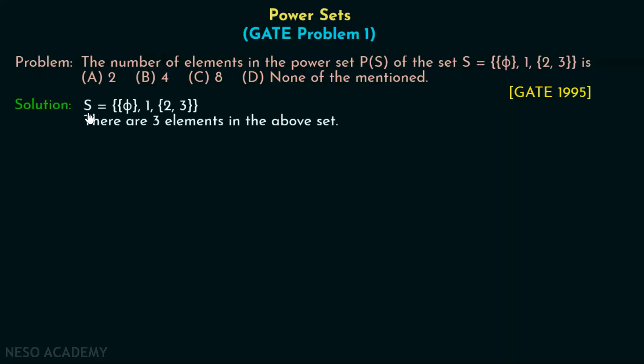So it is clear that we have total 3 elements in this set S. Set S has 3 elements. Therefore, the power set of S, that is P(S), must have 2 to the power 3, that is 8 elements. In this question, the number of elements have been asked. Obviously, option C is the correct option.